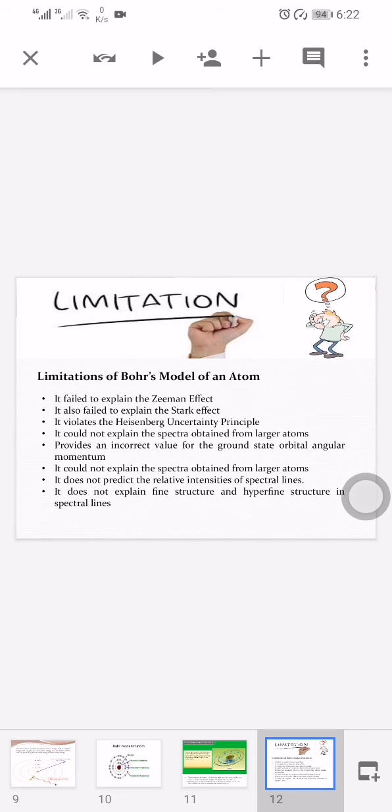Next are the limitations of Bohr's model of an atom. Bohr's model failed to explain the Zeeman effect, the effect of magnetic field on the spectra of atoms. It also failed to explain the Stark effect, the effect of electric field on the spectra of atoms.